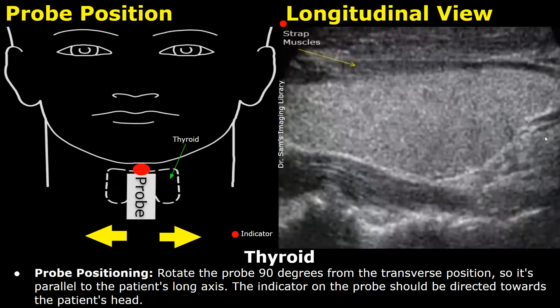After that, rotate the probe 90 degrees from the transverse position to scan in the longitudinal plane. The indicator should be towards the patient's head, and you will get this type of image.